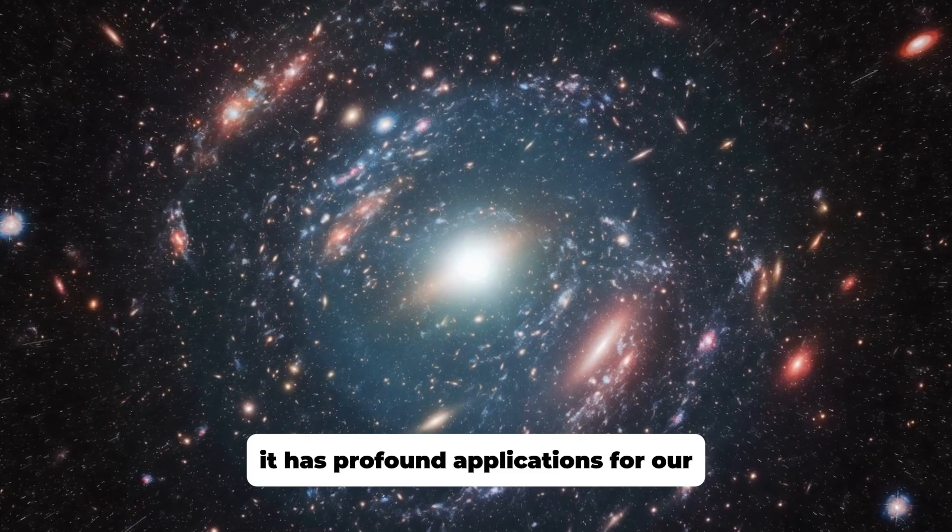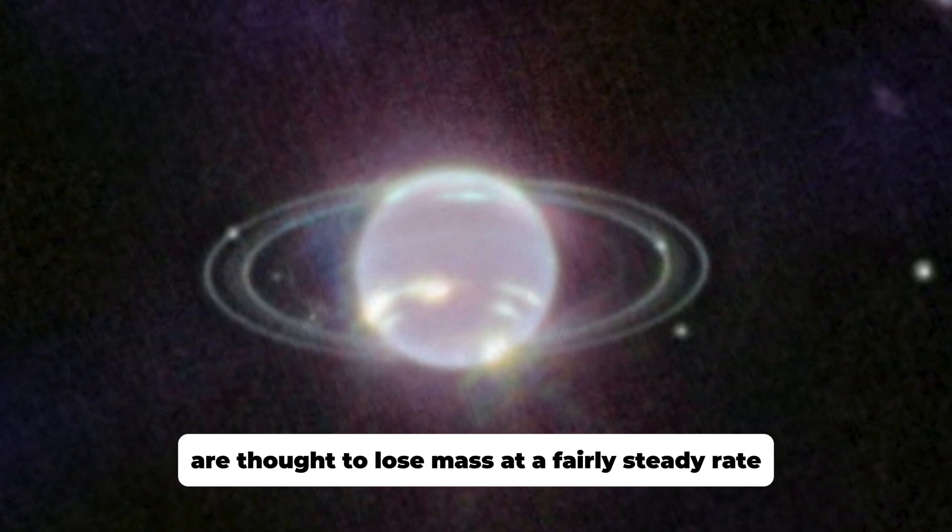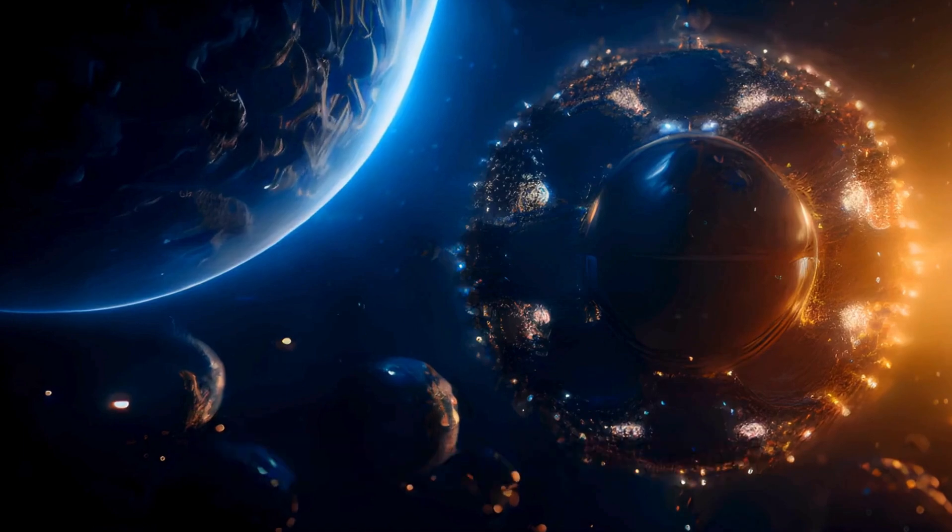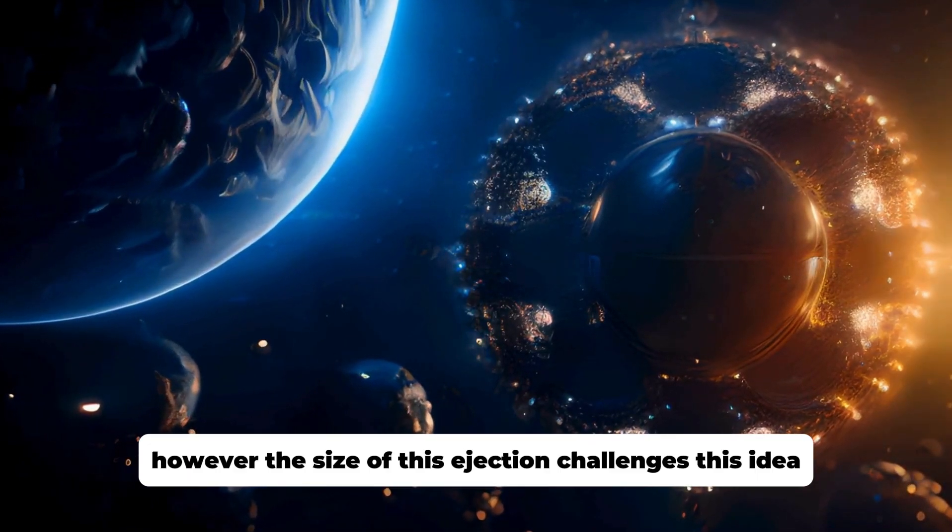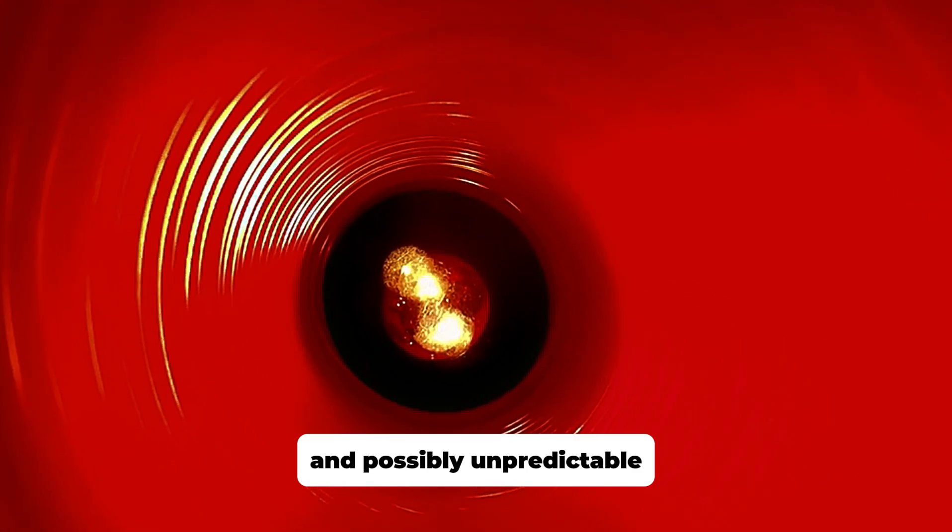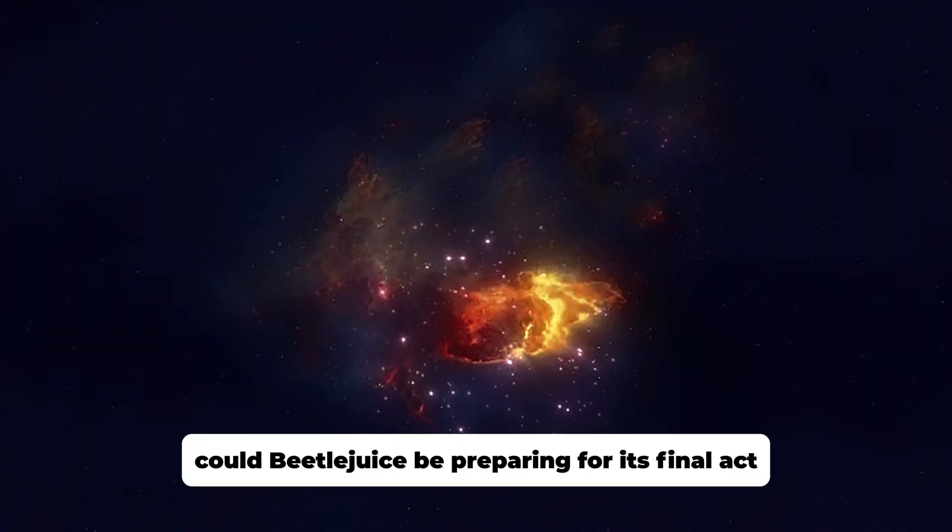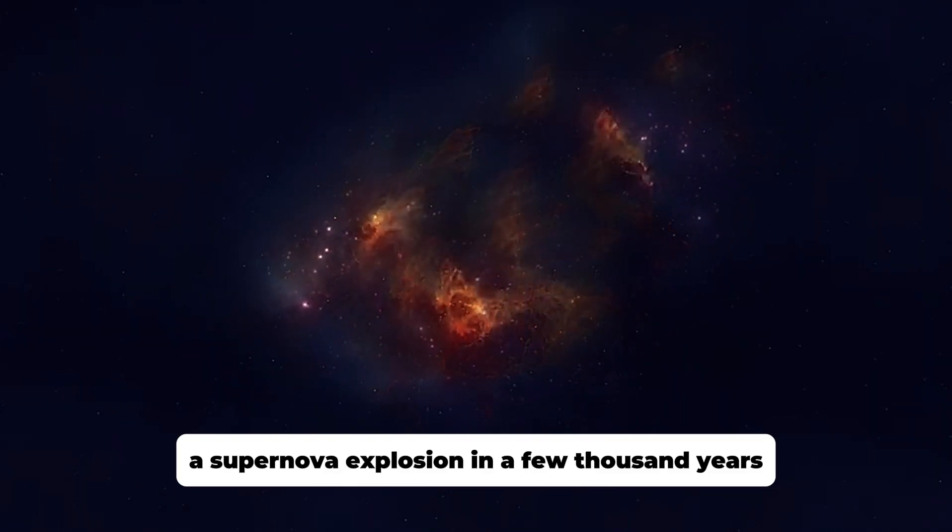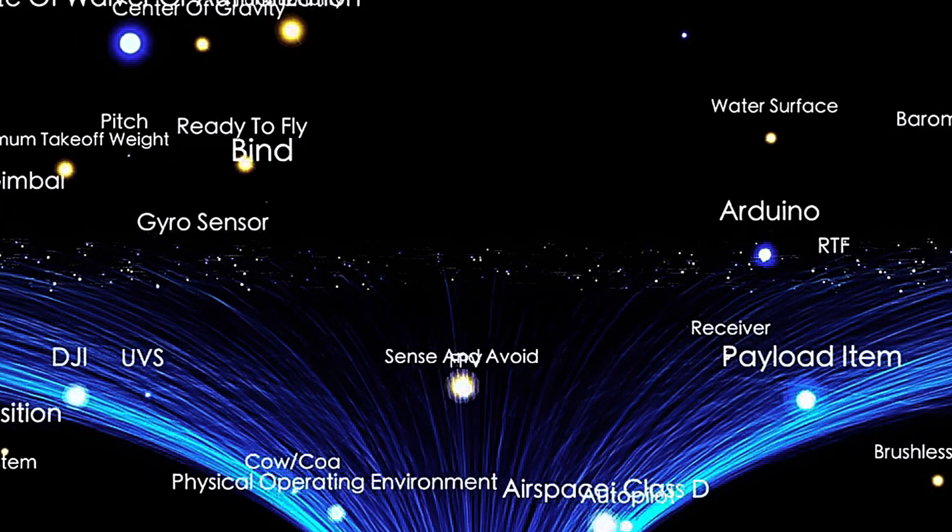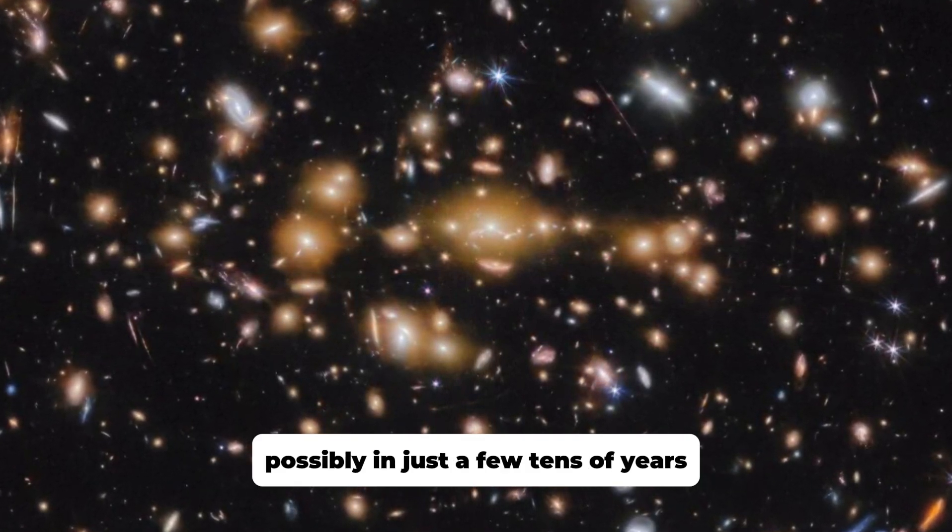It has profound implications for our theories about supernovae. Red supergiants like Betelgeuse are thought to lose mass at a fairly steady rate before they explode at the end of their lives. However, the size of this ejection challenges this idea, suggesting a more turbulent and possibly unpredictable end-of-life phase for these stars. Could Betelgeuse be preparing for its final act, a supernova explosion in a few thousand years? New studies speculate on when this might happen, suggesting it could occur sooner than previously thought, possibly in just a few tens of years.